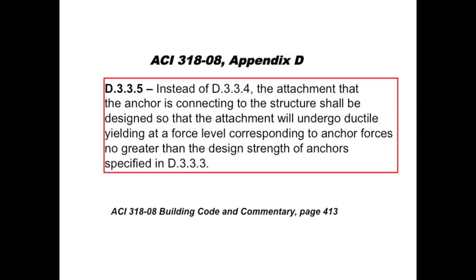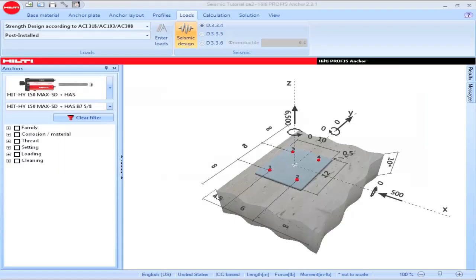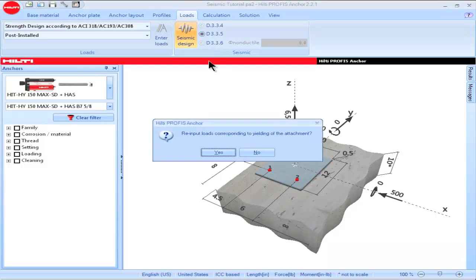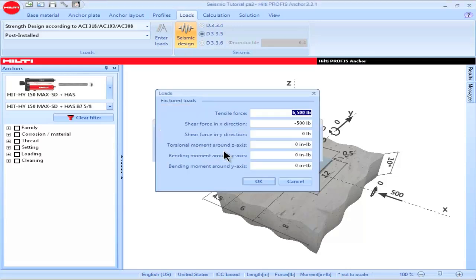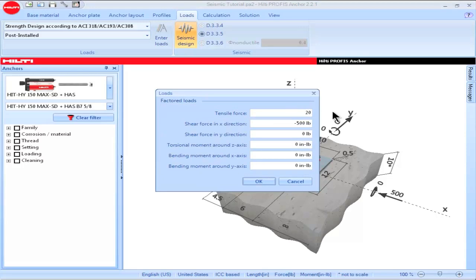Part D.3.3.3.5 offers an alternative to the ductile steel element provisions of D.3.3.3.4. It permits the attachment that the anchor is connecting to the structure to be designed so that it undergoes ductile yielding at a force level less than or equal to the design strengths calculated per the provisions of D.3.3.3.3. When D.3.3.3.5 is selected as an option, a pop-up will appear asking the user if they would like to re-input loads corresponding to yielding of the attachment. If no is selected, no load modification will be made. If yes is selected, the loads can be modified accordingly.